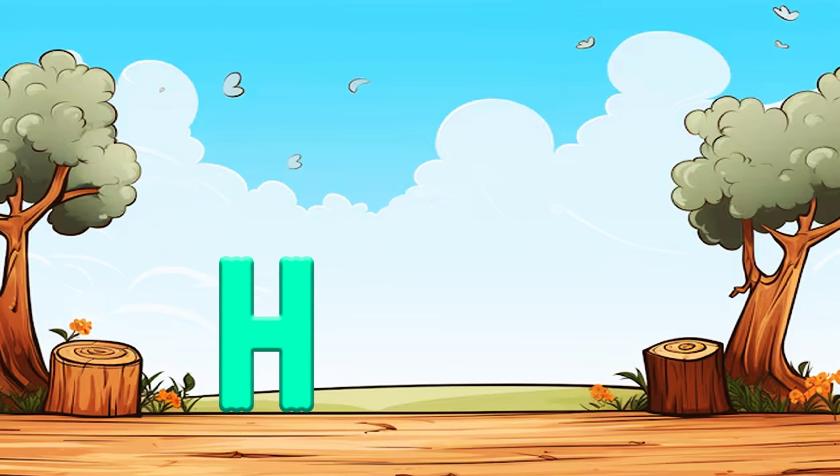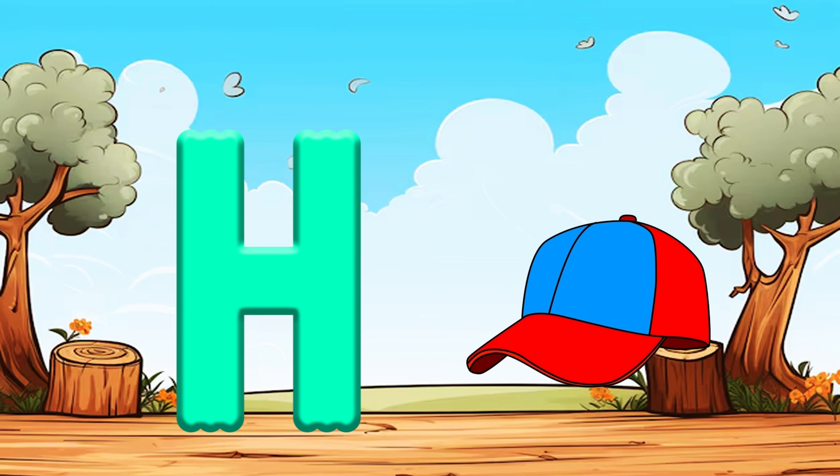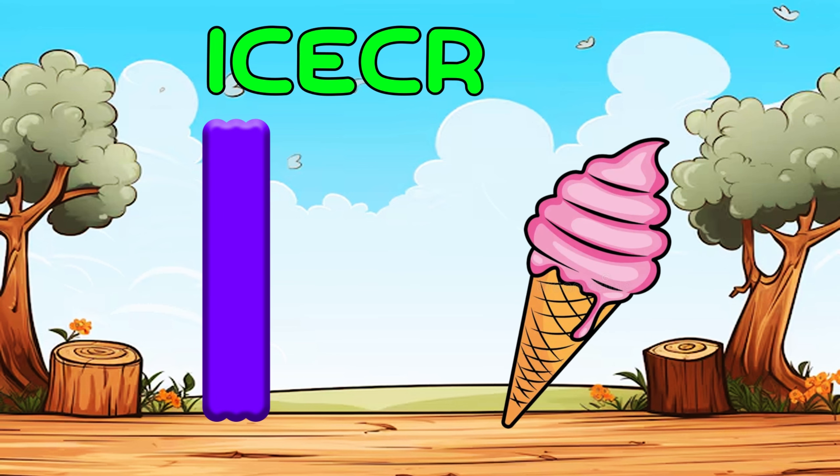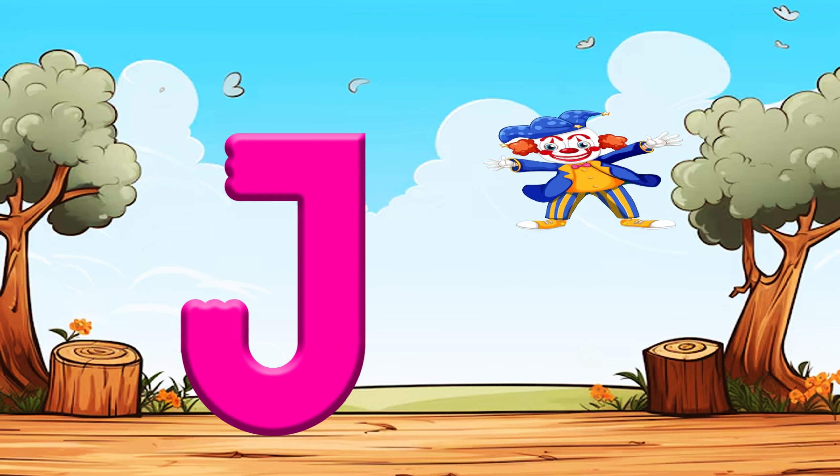G is for Gorilla, Ga, Ga, Gorilla. H is for Head, Ha, Ha, Head. I is for Ice Cream, A, A, Ice Cream.